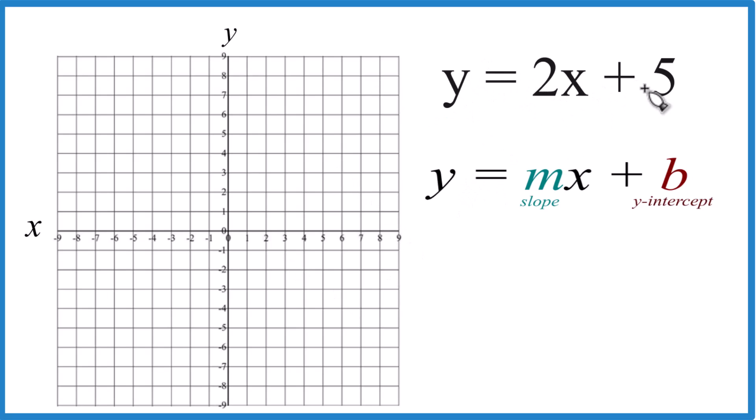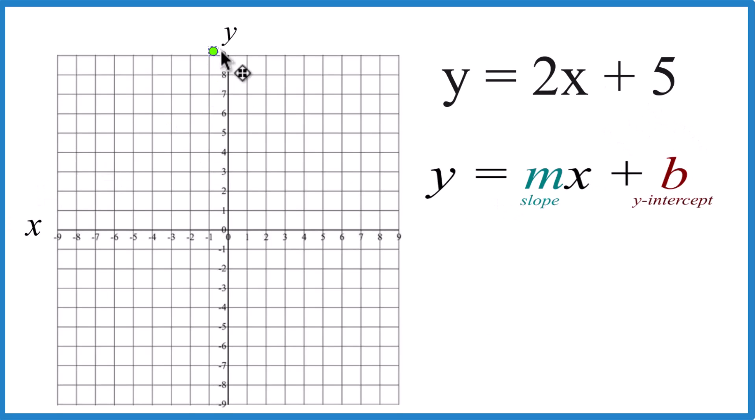So we have y equals 2x plus 5, and then y equals mx plus b, so b, that's the y-intercept, which is 5. So we go over to the y-axis, we find 5, that's where we're going to cross the y-axis for our line here, y equals 2x plus 5.